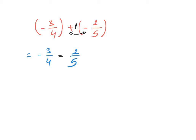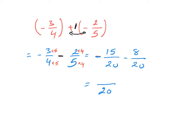Now we need to find the least common denominator between the two fractions. There is nothing common between four and five, so we just multiply four with five: four times five on both sides, giving an LCD of 20. So it's going to be negative 15 over 20 minus eight over 20. We keep the denominator and combine the numerators: negative 15 and negative eight.